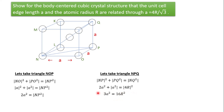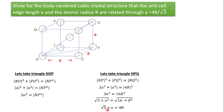Now we take the square root of both sides of 3a² = 16r². The square root of 3a² gives √3 · a, and the square root of 16r² gives 4r. So we get √3 · a = 4r. Making a the subject, we get a = 4R / √3. That is the relationship between the lattice parameter a and the atomic radius r for BCC.